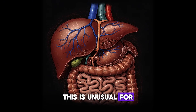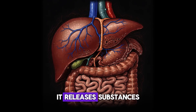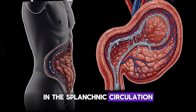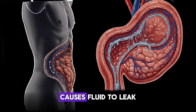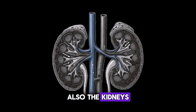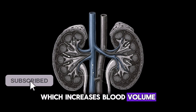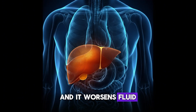This is unusual for the body and triggers a maladaptive response. It releases substances that cause dilation of blood vessels in the splanchnic circulation. This vasodilation, combined with the increased pressure, causes fluid to leak from the capillaries into the peritoneal cavity. Also, the kidney starts to retain water and salt in the blood, which increases blood volume and further increases hydrostatic pressure within the vessels, worsening fluid leakage and contributing to ascites.